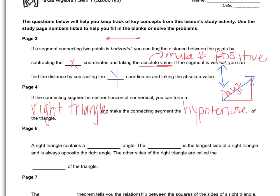So a right triangle always contains a right angle. So that would be this angle in the corner here. And the hypotenuse is the longest side of a right triangle and is always opposite the right angle. It's wherever the right angle is pointing to. The other sides of the right triangle are called the legs of the triangle.